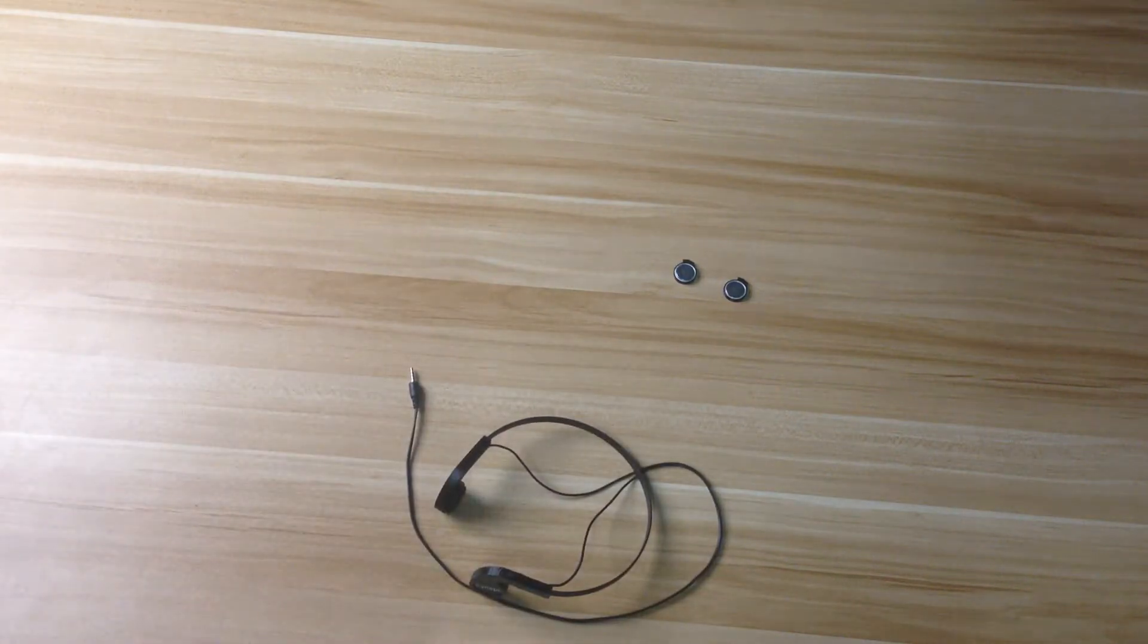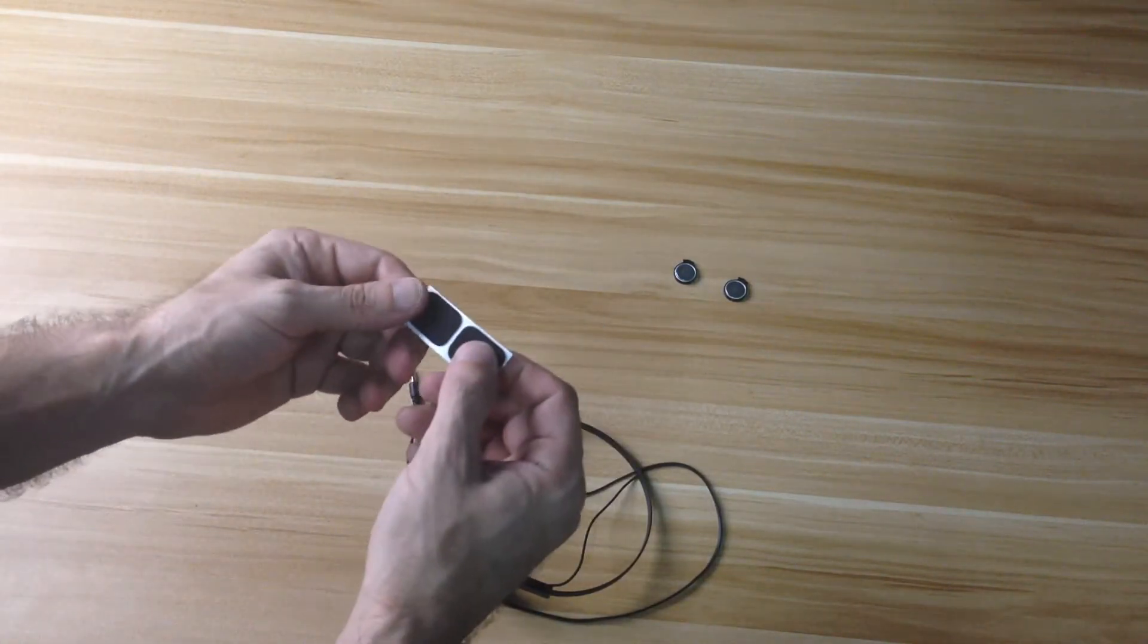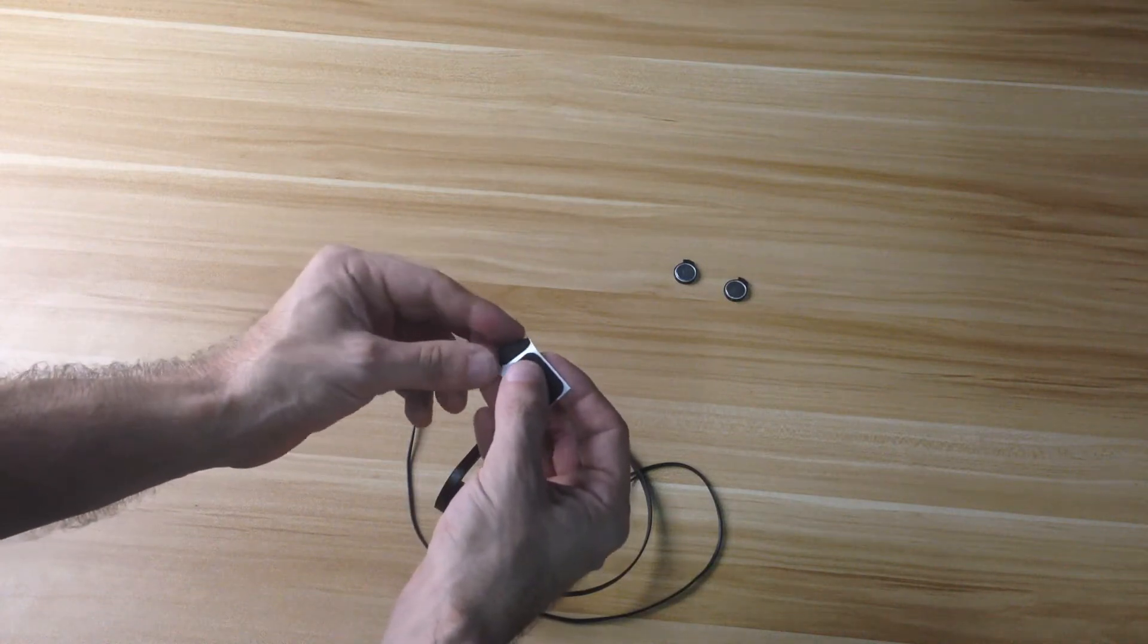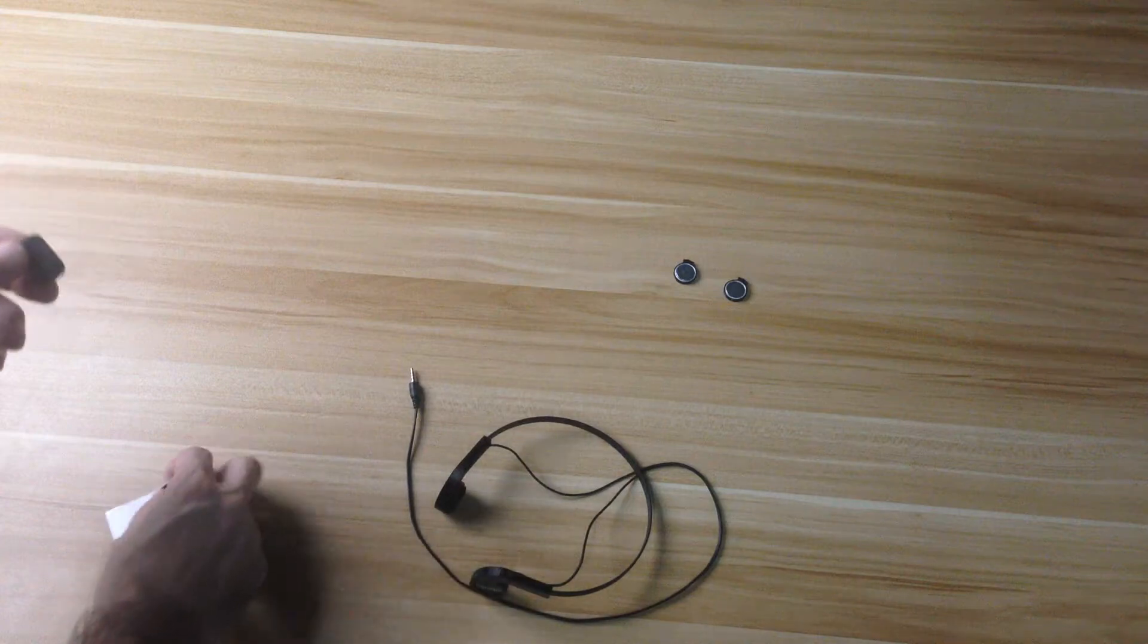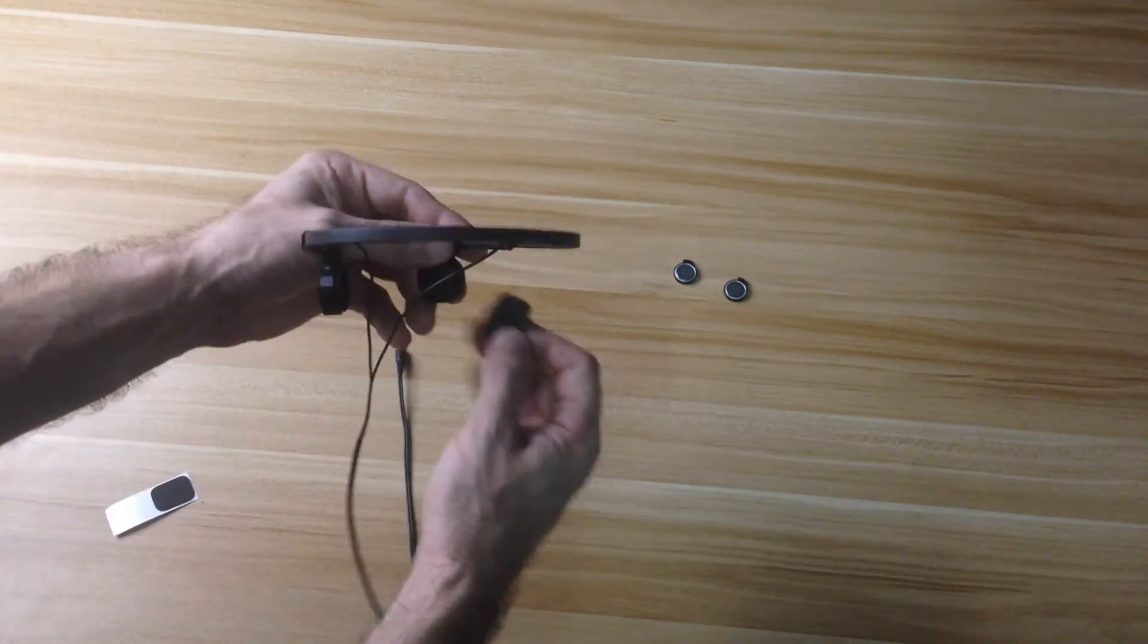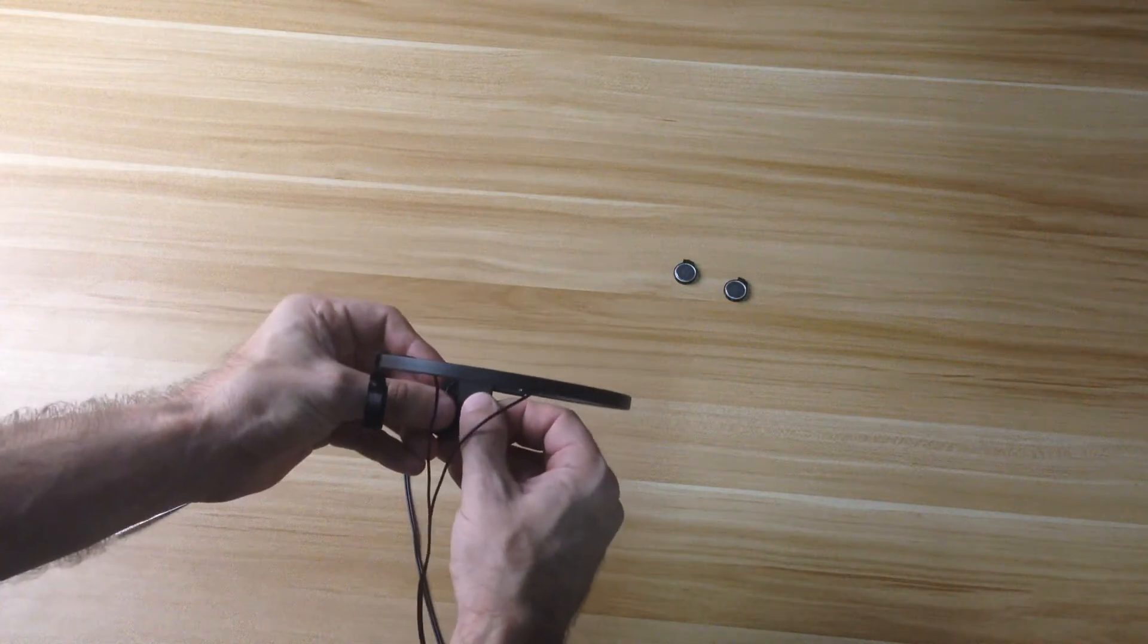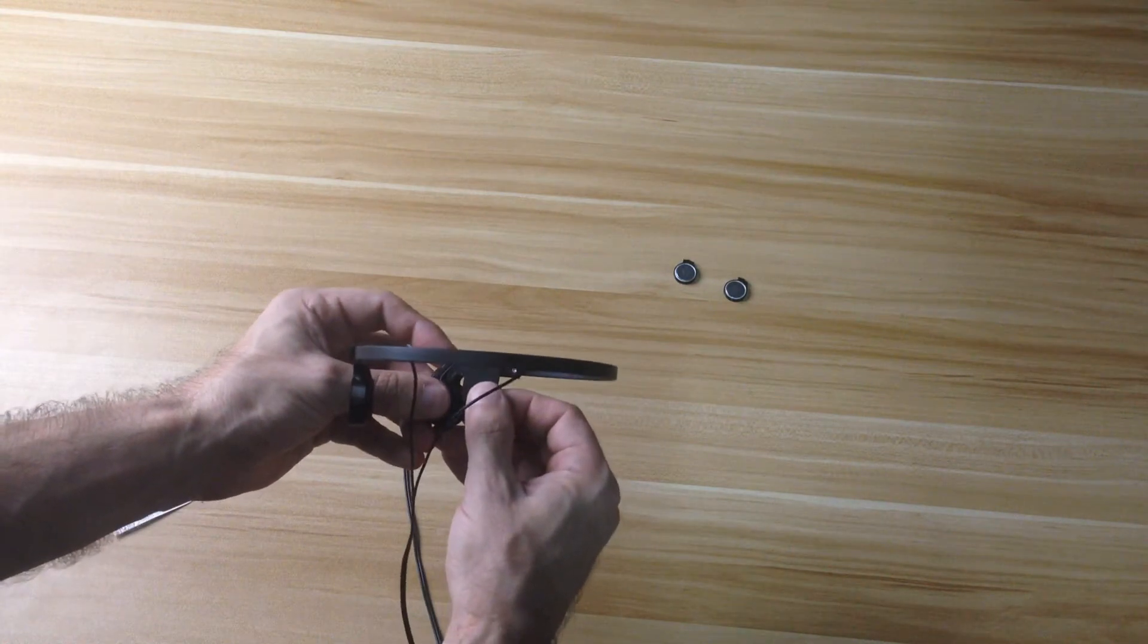We're going to give you these two little pieces of foam. And this just makes it a little bit more comfortable on your ears and keeps the wire in place. So you want to kind of put it in the middle here between the end and the screw, kind of like right here.